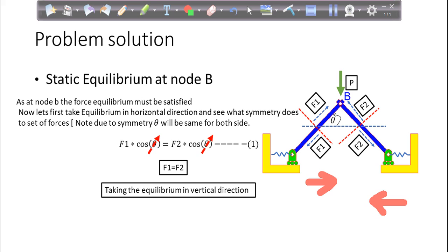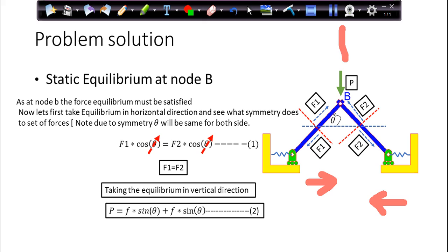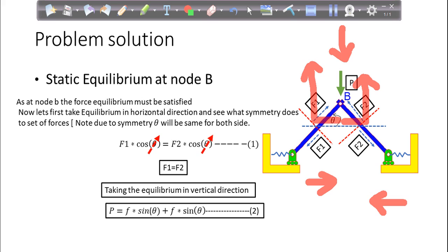Now doing the same force balance for the vertical direction, what we'll get is P equals F plus F sin theta plus F sin theta. Where force P is acting in downward direction. And if we resolve this force F1, it will get resolved horizontally and then vertically in this direction. Similarly, this force F2 is horizontally here and vertically here. So for equilibrium, the upward force should equal the downward force. So F sin theta plus F sin theta equals P. And we already know that F1 equals F2. That's why I'm not writing F1 sin theta plus F2 sin theta. Directly you can say that P equals 2F sin theta. So these are the two findings that we got from node B.